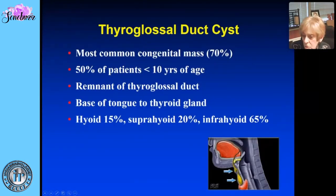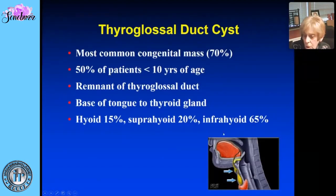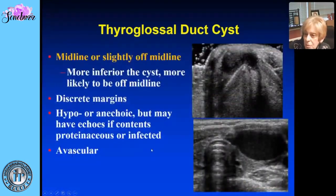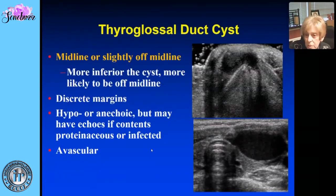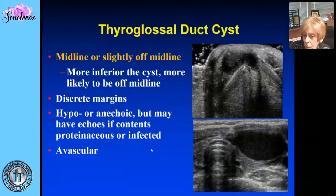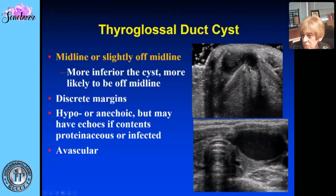You can see this lesion anywhere along the course of descent of the duct. Fifteen percent of cysts are at the level of the hyoid bone, 20 percent above, and most below the hyoid bone. The ultrasound appearance is quite classic: you're looking for a midline lesion, or slightly off midline. The more inferior the cyst, the more likely it is to be off midline. It has discrete margins, may be hypoechoic, can have a few echoes if the contents contain protein or if infected, and it is avascular.